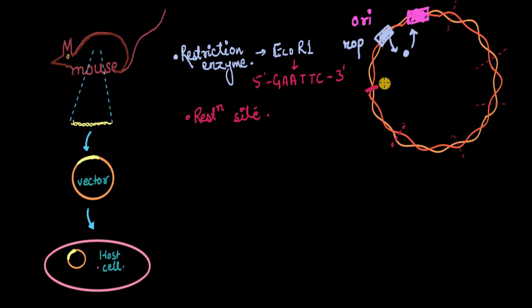After making the cut, we insert our gene of interest into the vector. Our gene binds to the sticky ends of the vector, and DNA ligase ligates it.